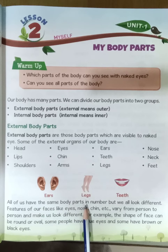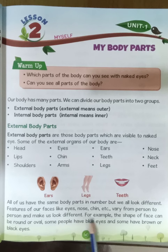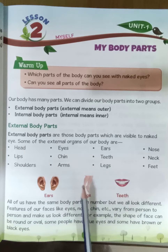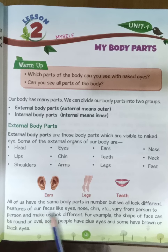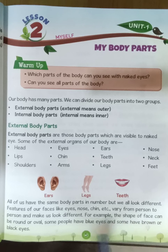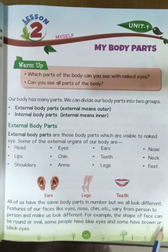All of us have the same body parts in the same numbers, but we all look different. Features of our faces like nose, eyes, chin etc. vary from person to person and make us look different. For example, the shape of the face can be round or oval. Some people have blue eyes and some have brown or black eyes. The features of our body parts like eyes, nose, chin vary from person to person, so we look different from each other.